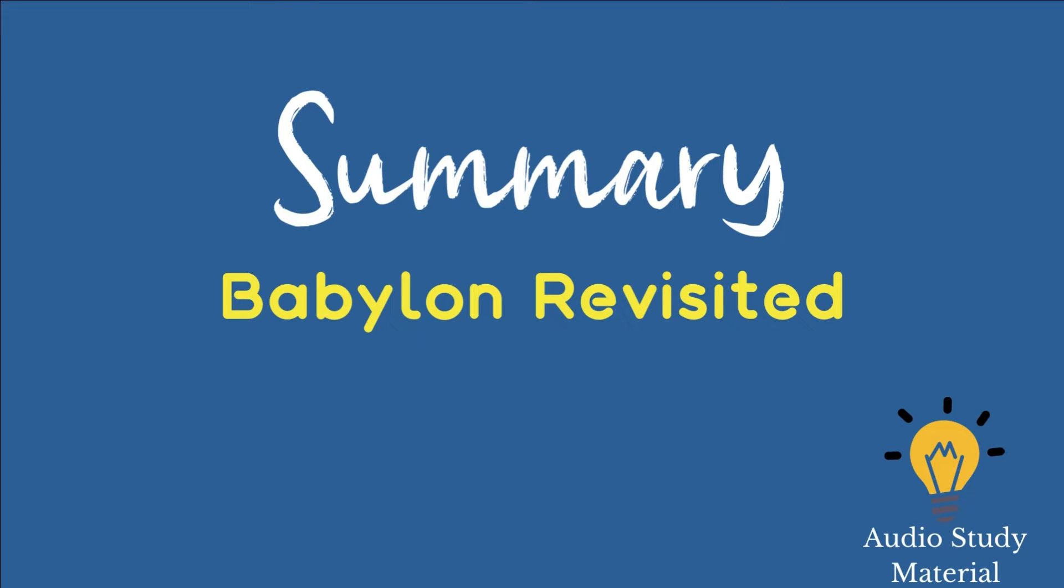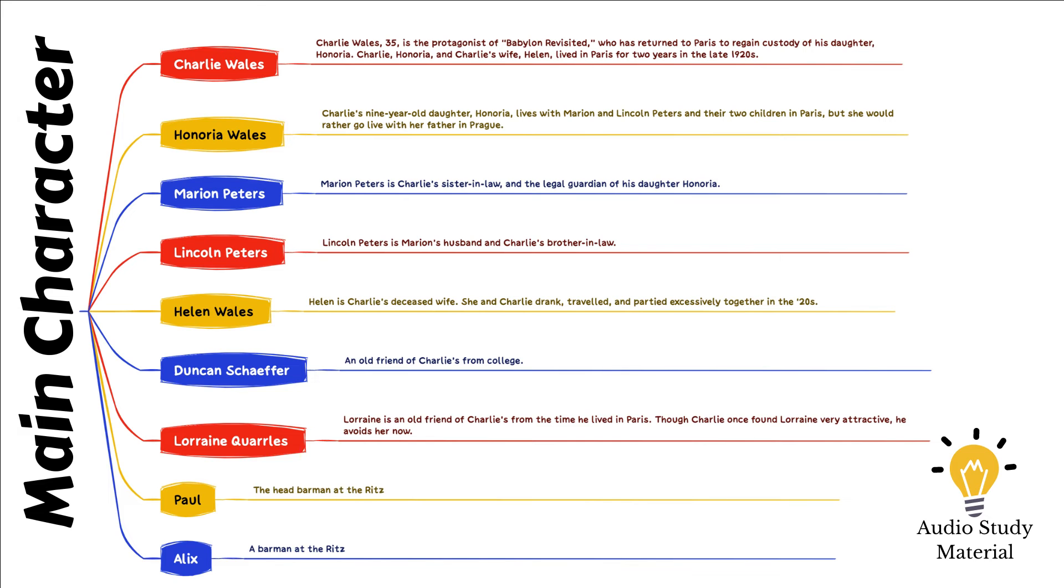Charlie begins the story by asking Alex, the bartender at the Ritz, about all the characters who used to frequent the bar. However, it appears that all of Charlie's old acquaintances, with the exception of Duncan Schaefer, have left Paris, no longer as fabulously wealthy as they were during the 1920s.